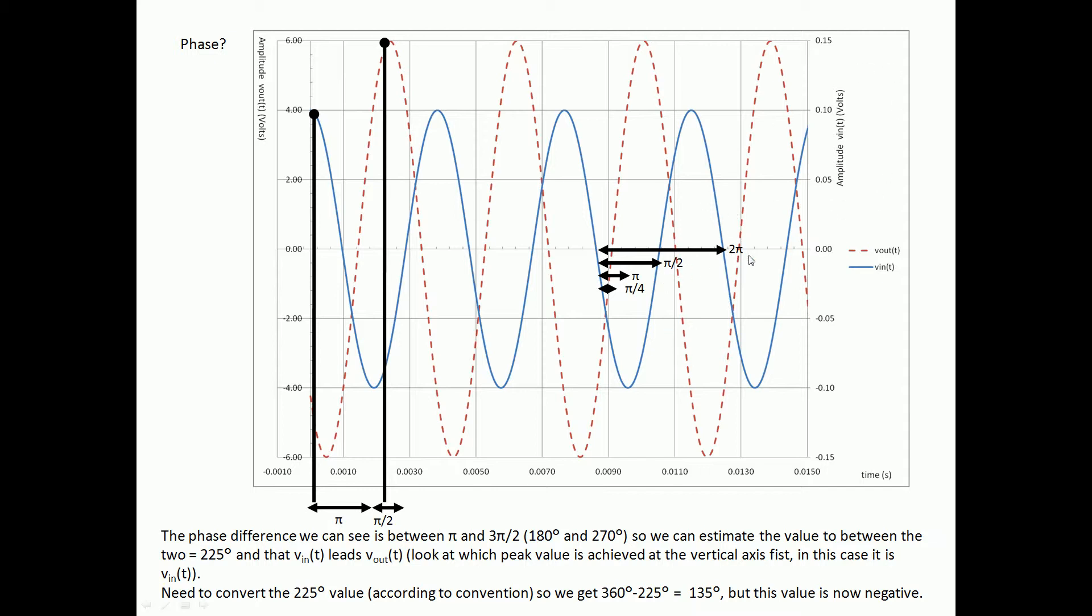So one cycle of a wave is a distance of 2π. Half of that is π/2, we've got π and π/4. So if we look at what the size of this gap is, we can see that the difference is between π and 3π/2, so that means it's somewhere between 180 degrees and 270 degrees. So what I'm going to do is estimate the value to be about halfway between the two, which would make it 225 degrees.